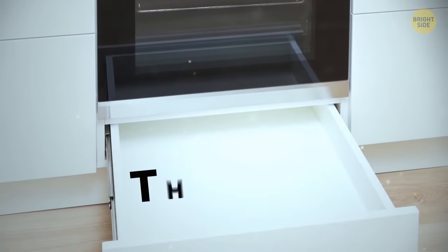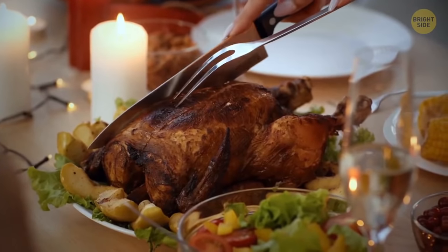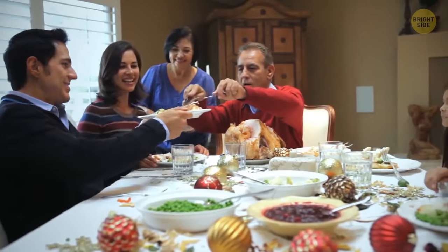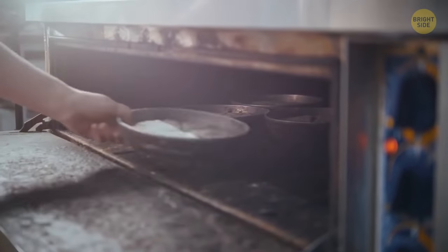You've heard before that a drawer beneath your oven is there for keeping the food warm if the guests are running late. Here's one more hidden function. You can slow cook on lower temperatures in that drawer, too.